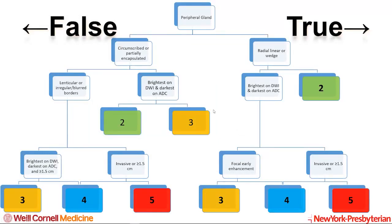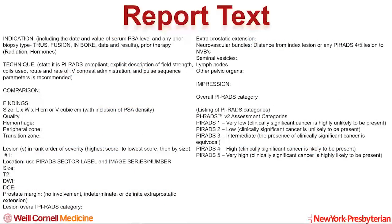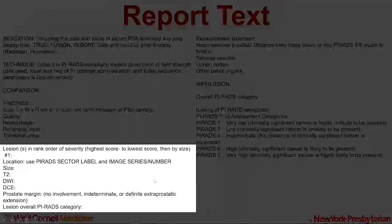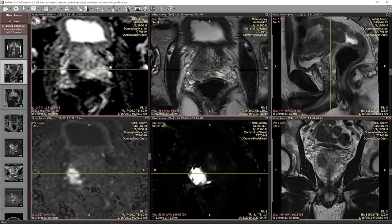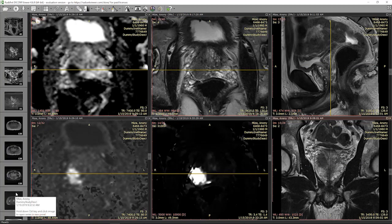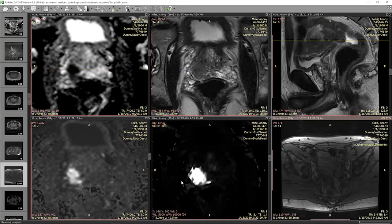Another way to think about it is this flowchart, where when a box is true you branch right, and when it's false you branch left. I'll show you how to use this to categorize lesions as we go through the MRI. This brings us to the report text — I'm going to draw your attention to how we describe lesions in the prostate. The first thing I'd like to show you is why you might want to use a perfusion map as opposed to a raw enhancement curve.